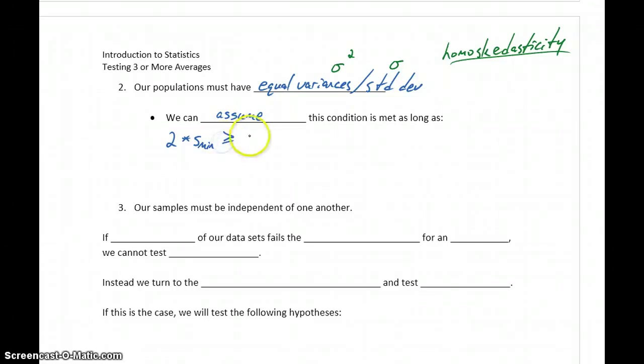is greater than or equal to the largest sample standard deviation. Or, rewriting that with a little bit of algebra, if we calculate the ratio of our largest sample standard deviation to the smallest, that value should be less than or equal to two. One of the things we're going to do is calculate some summary stats to get our largest and smallest values, calculate that ratio, and make sure it's less than or equal to two.